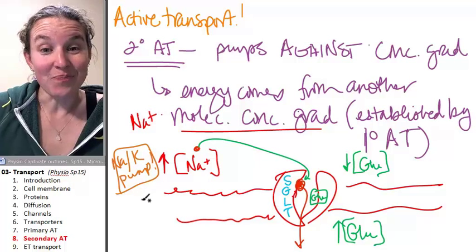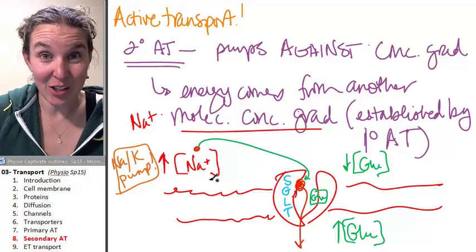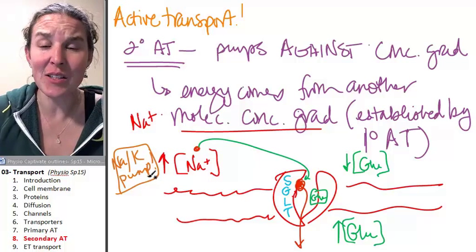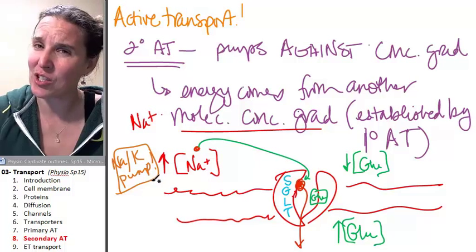ATP was required because the only reason why we have a high concentration of sodium in the extracellular fluid is because of the sodium-potassium pump which was powered by ATP. Do you follow that?